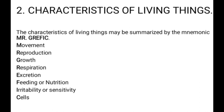M stands for movement, R stands for reproduction, G stands for growth, another R stands for respiration, E for excretion, F for feeding, I for irritability, and C for cells. Each and every living thing has these characteristics — they are able to move, reproduce, grow, respire, excrete, feed, sense or respond to stimulus, which is irritability, and they have cells.